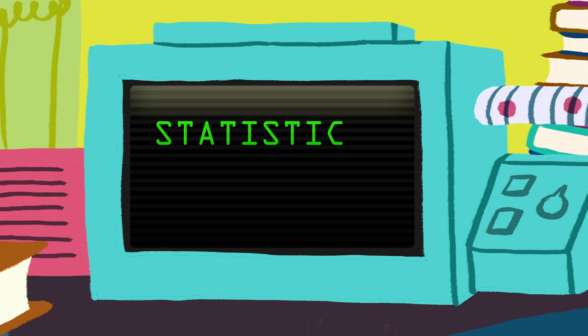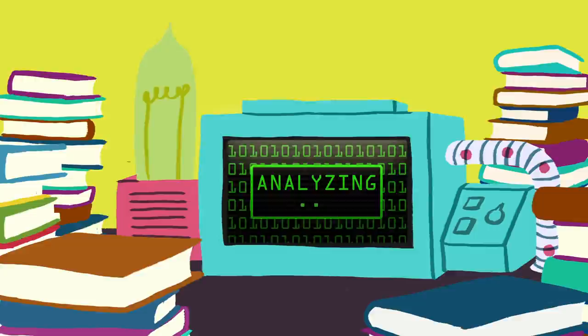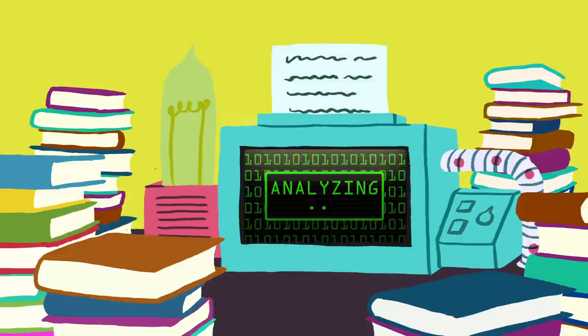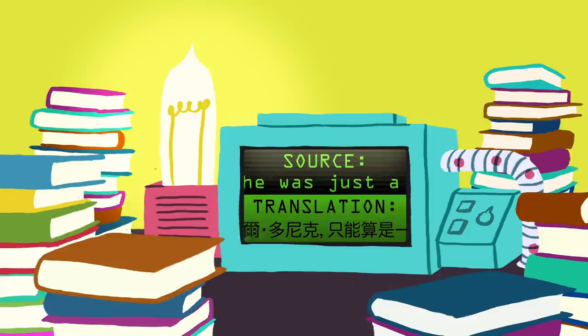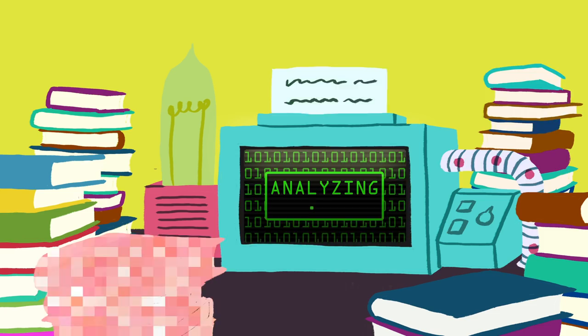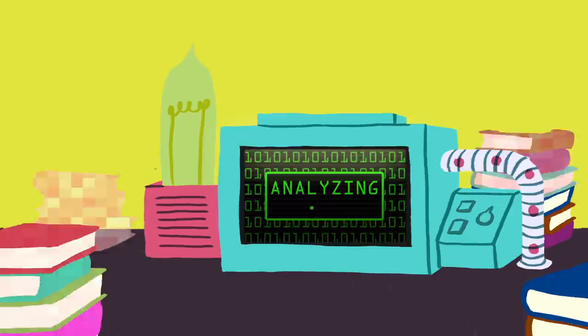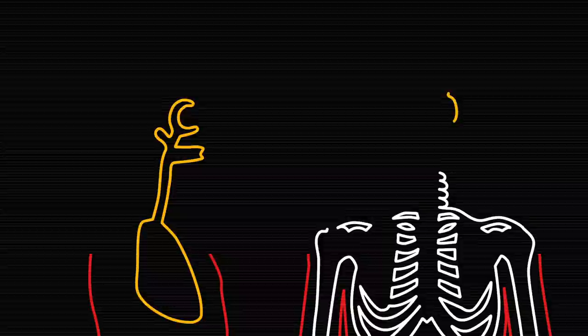Another method is statistical machine translation, which analyzes a database of books, articles, and documents that have already been translated by humans. By finding matches between source and translated texts that are unlikely to occur by chance, the program can identify corresponding phrases and patterns and use them for future translations. However, the quality of this type of translation depends on the size of the initial database and the availability of samples for certain languages or styles of writing.